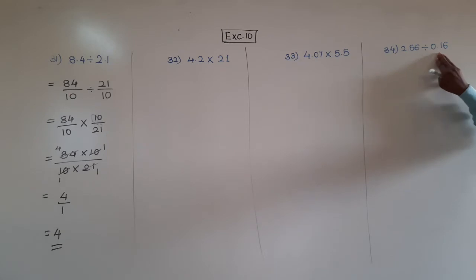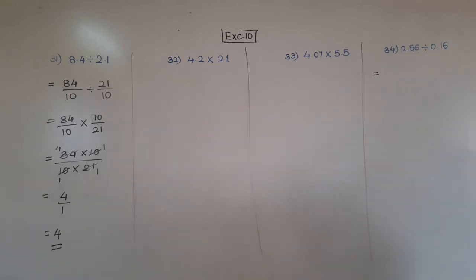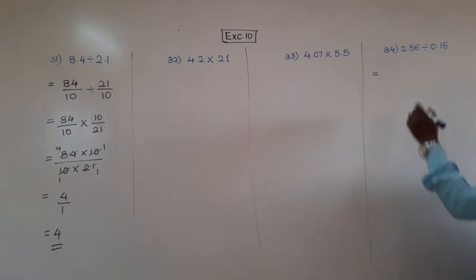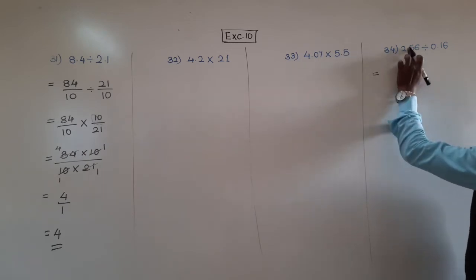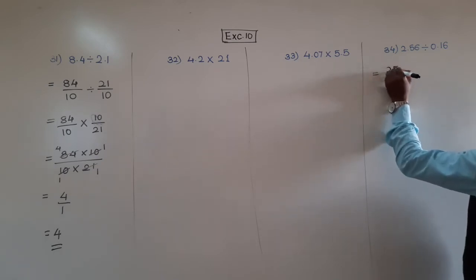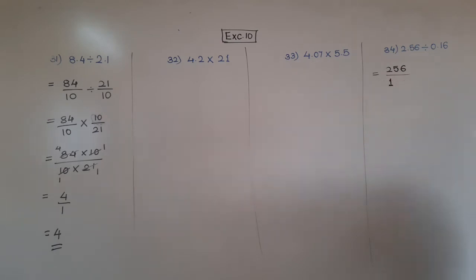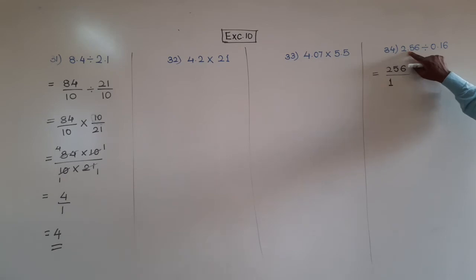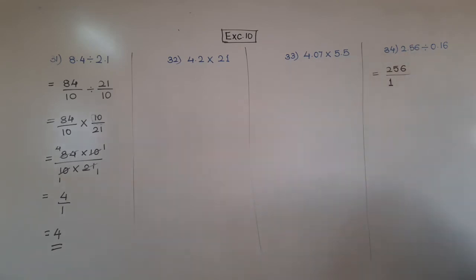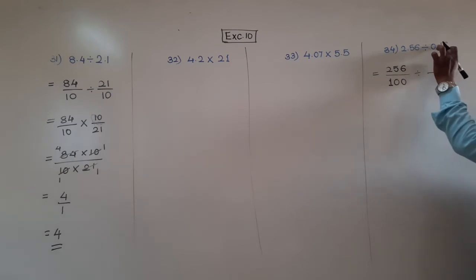Next: 2.56 divided by 0.16. What to do first? Convert these decimal numbers into common fractions. 2.56 — put your finger on the decimal point; which number do you observe? 256. Write 256 in the numerator. In the denominator write 1, and after 1 put as many zeros as there are decimal places after the decimal point — there are two decimal places, so put two zeros. That is 100. So 2.56 equals 256 upon 100. For 0.16 — the number ignoring the decimal point is 16. There are two decimal places, so put two zeros: 0.16 equals 16 upon 100.